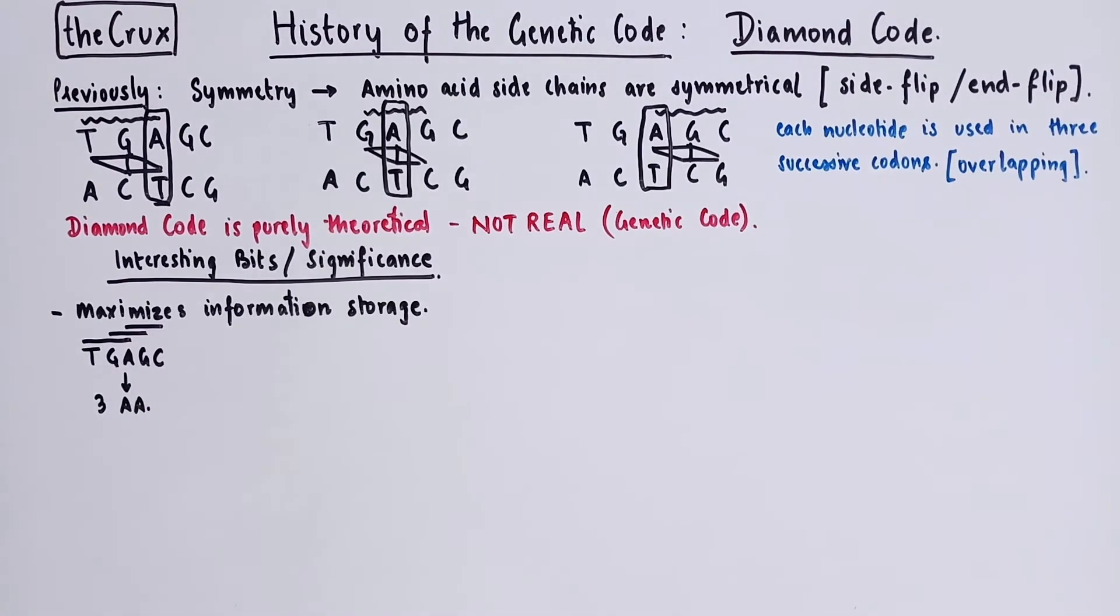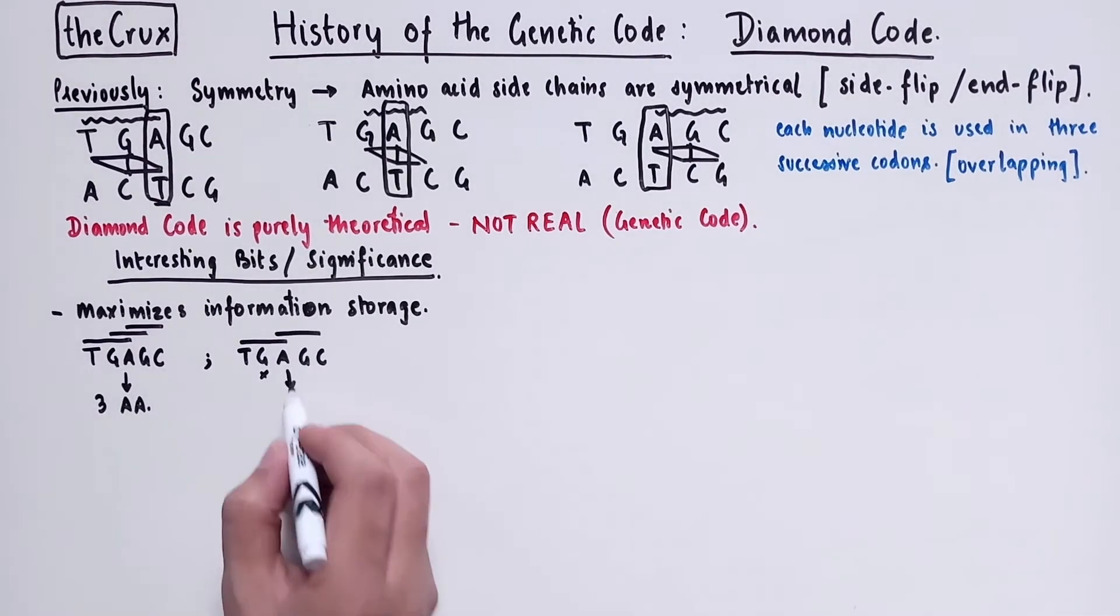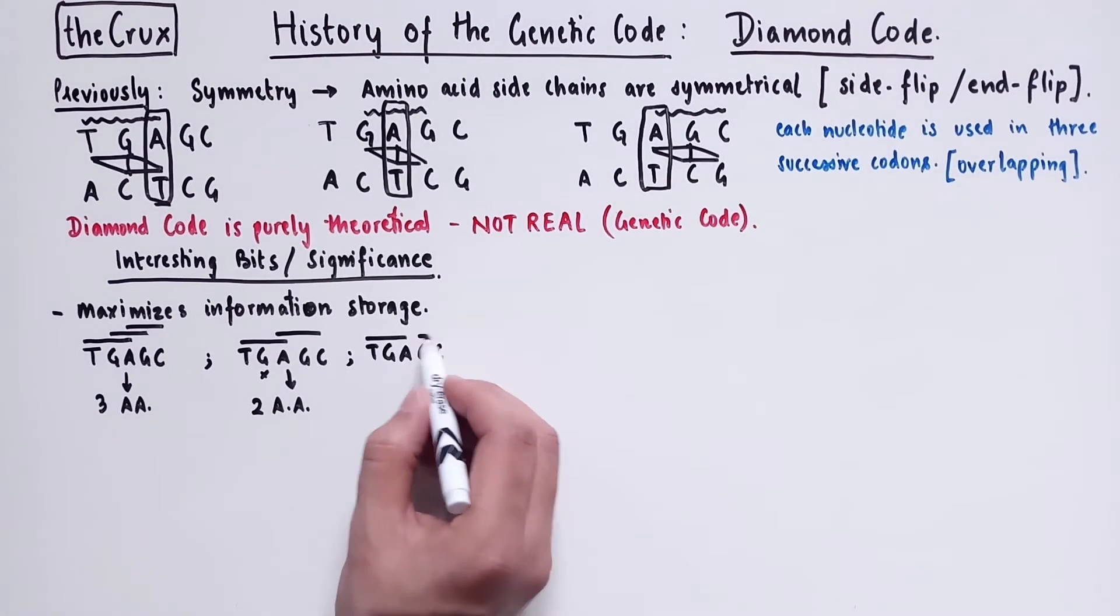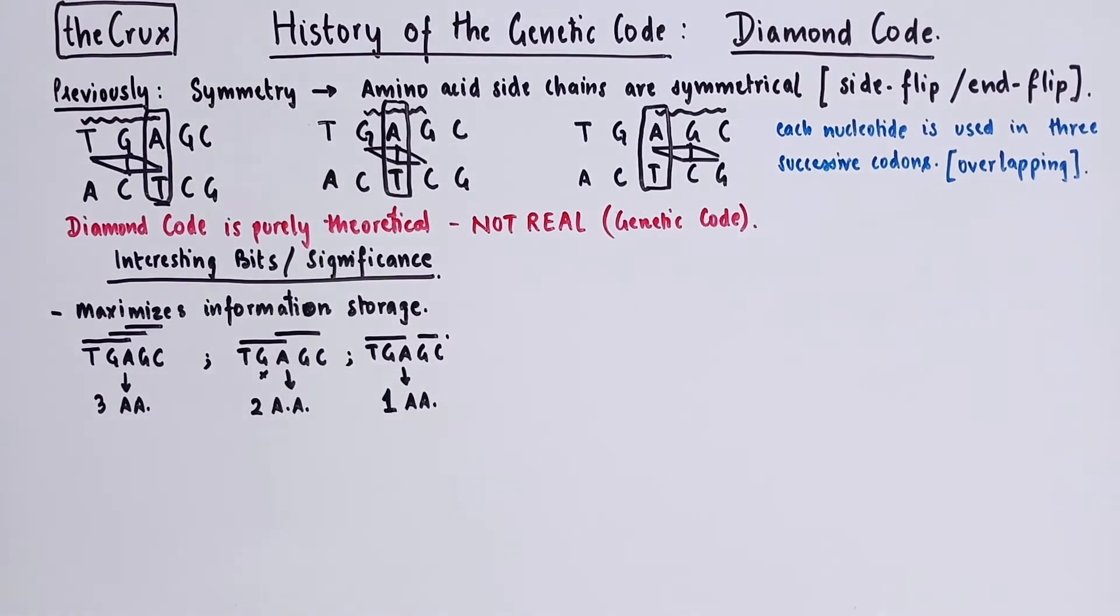Now if we set the overlap by skipping the middle base of the codon, you get TGA and AGC. And that results in two amino acids. And we can compare this to a non-overlapping code, where this strand will only give rise to one amino acid using the TGA codon. Now TGA is actually a stop codon. But diamond code was postulated in 1954, and stop codons were discovered in 1960s. Here's a fun fact about TGA. It actually also codes for selenocysteine, which is a non-standard amino acid, which is also known as the 21st amino acid. It happens if a selenocysteine insertion sequence is available.